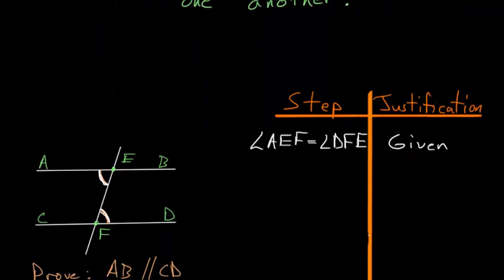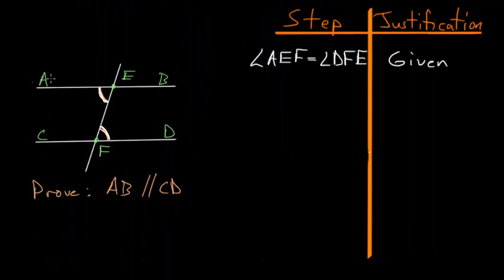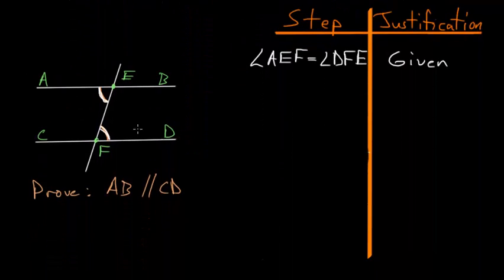So if we start with two lines, AB and CD, and we have a third line, EF, that falls on top of these lines, and we know that the alternate angles, this angle AEF and this angle DFE are equal to each other,